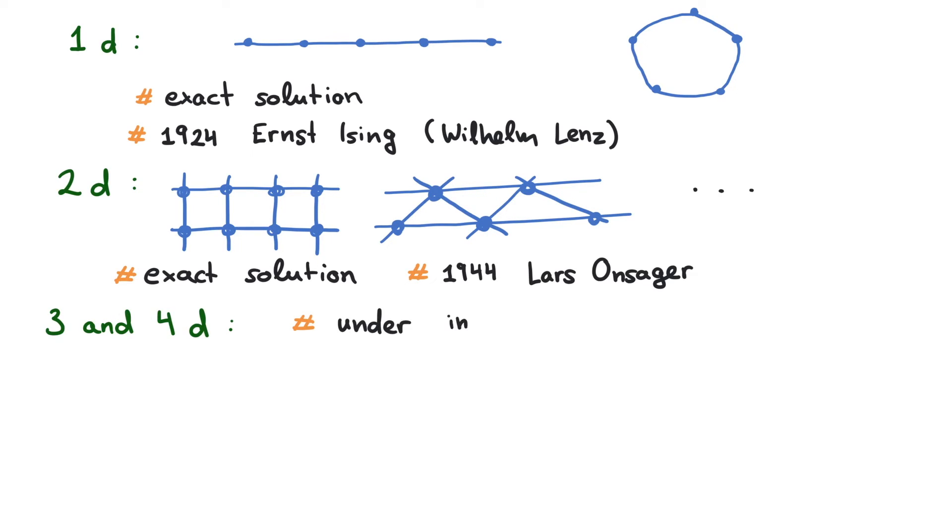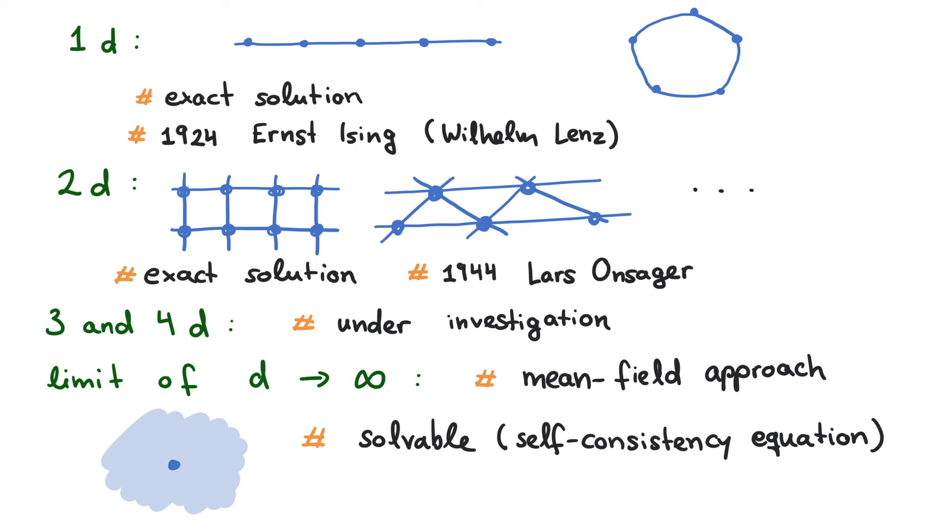The Ising model in 3 and 4 dimensions is still under investigation. However, the limit of large dimensions can be described by a mean field approach. That is, one site is described in an effective field construed by the surrounding sites.